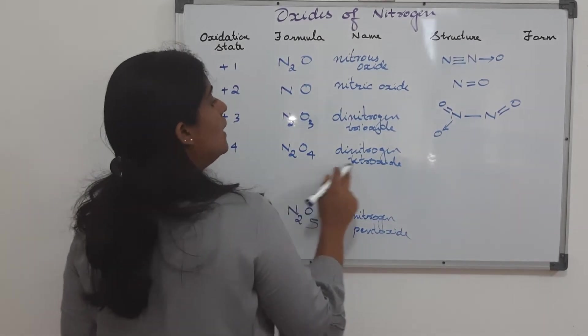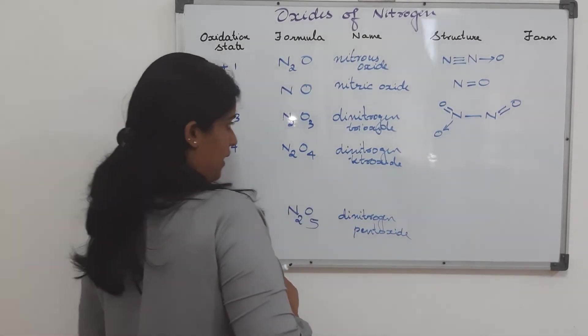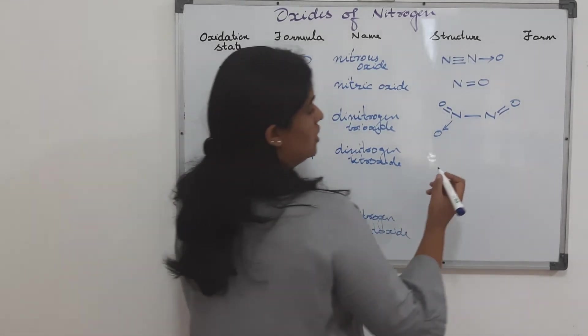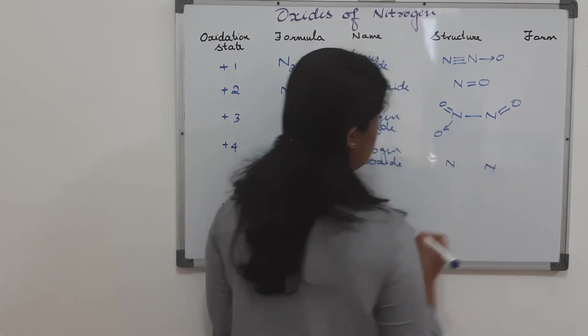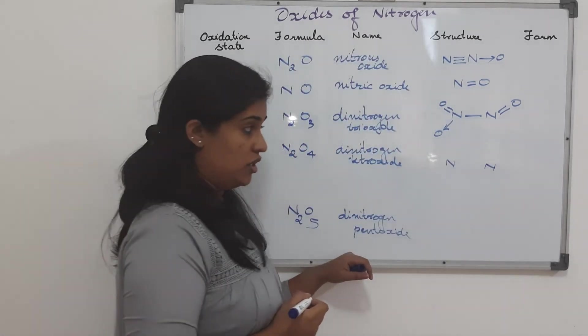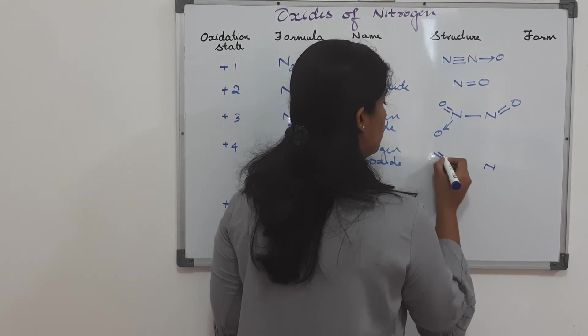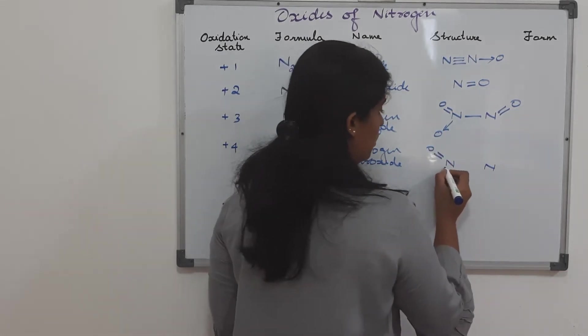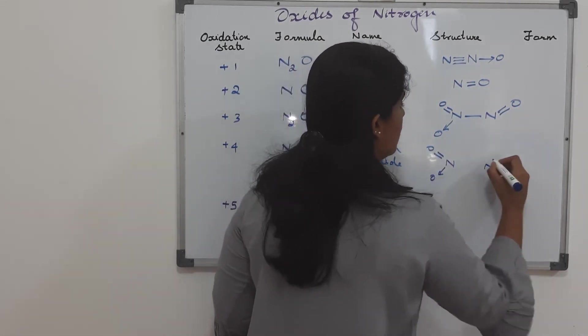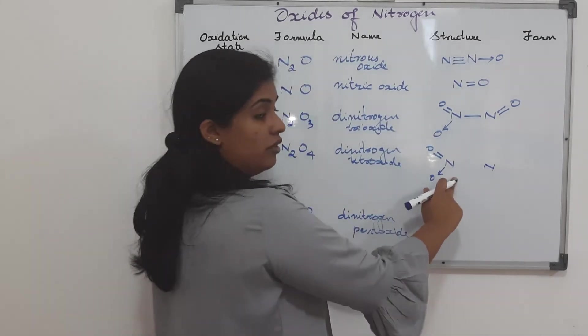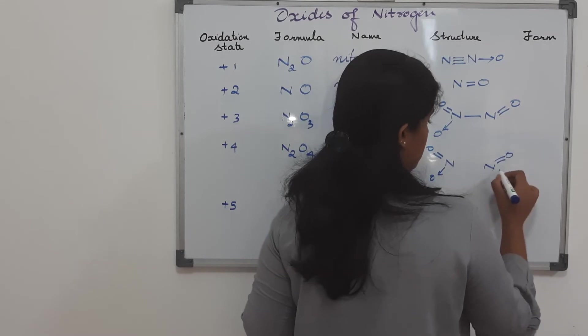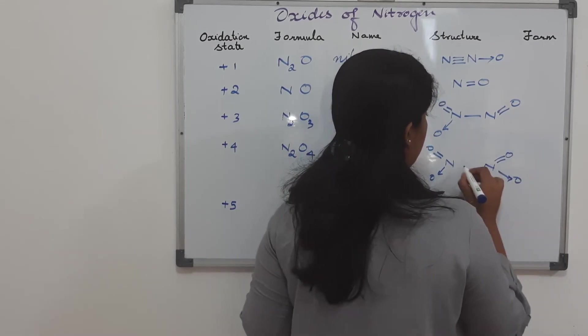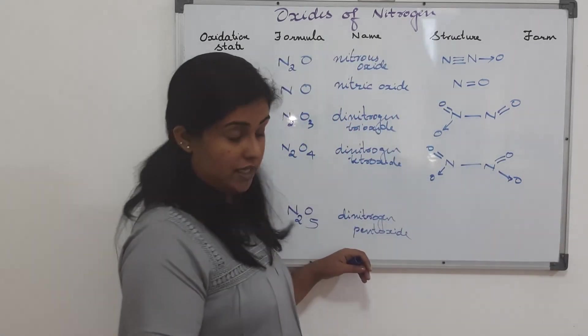And then, dinitrogen tetroxide. Let's look into that. Again, two nitrogens are there. One nitrogen is here, one nitrogen is here. And four oxygens. So, two oxygens we go for, one is double bonded, one is dative bonded. Again, the other two. Out of the four, two we gave to the first nitrogen. The remaining two oxygens will go to the second nitrogen. And a bond exists between the nitrogens.